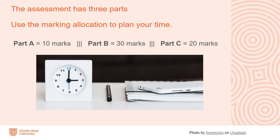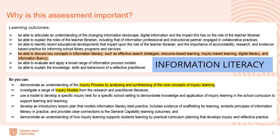Use the marking allocation to plan your time accordingly. You can see that part A is worth 10 marks, part B is the core of the assessment and is worth 30 marks, and part C is also quite significant and worth 20 marks. In this assessment you'll be able to demonstrate all of your learning about the inquiry process by investigating a range of information literacy models.